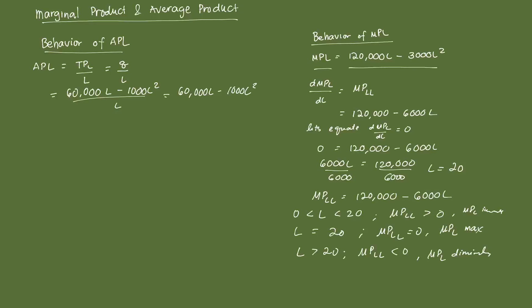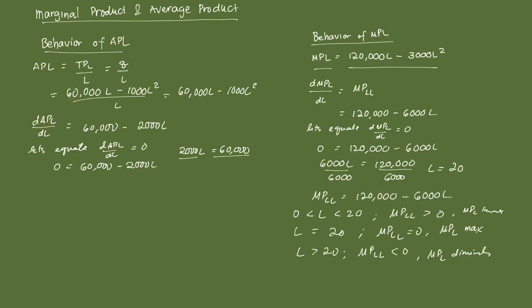In order to get a grasp of how the graph would look, we need the second-order derivative again. That's DAPL with respect to L, and we get 60,000 minus 2,000L — that's the slope of the average product of labor function. Equating DAPL over DL to zero, we get 2,000L equals 60,000. Dividing both sides by 2,000, we get L equal to 30.